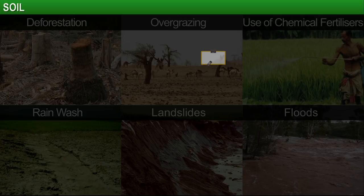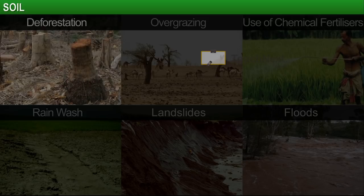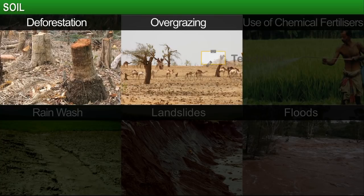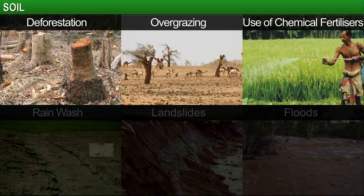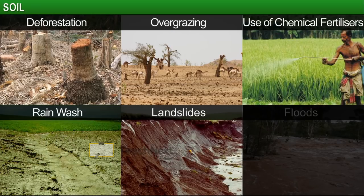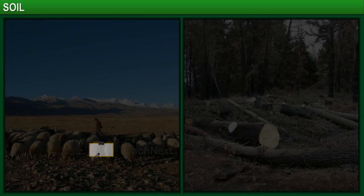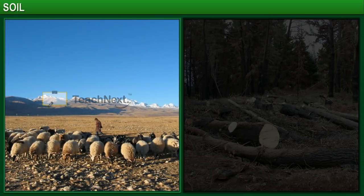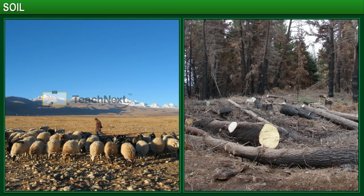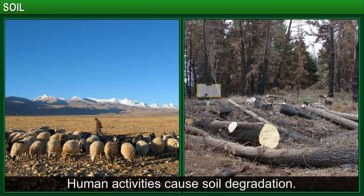Soil degradation is caused by deforestation, overgrazing, excessive use of chemical fertilizers and pesticides, rain wash, landslides, and floods. For example, one of the main reasons for the lack of fertile soil in Afghanistan is overgrazing. In Iran, trees were cut down for timber and fuel and were not replaced, which has led to widespread degradation of soil.